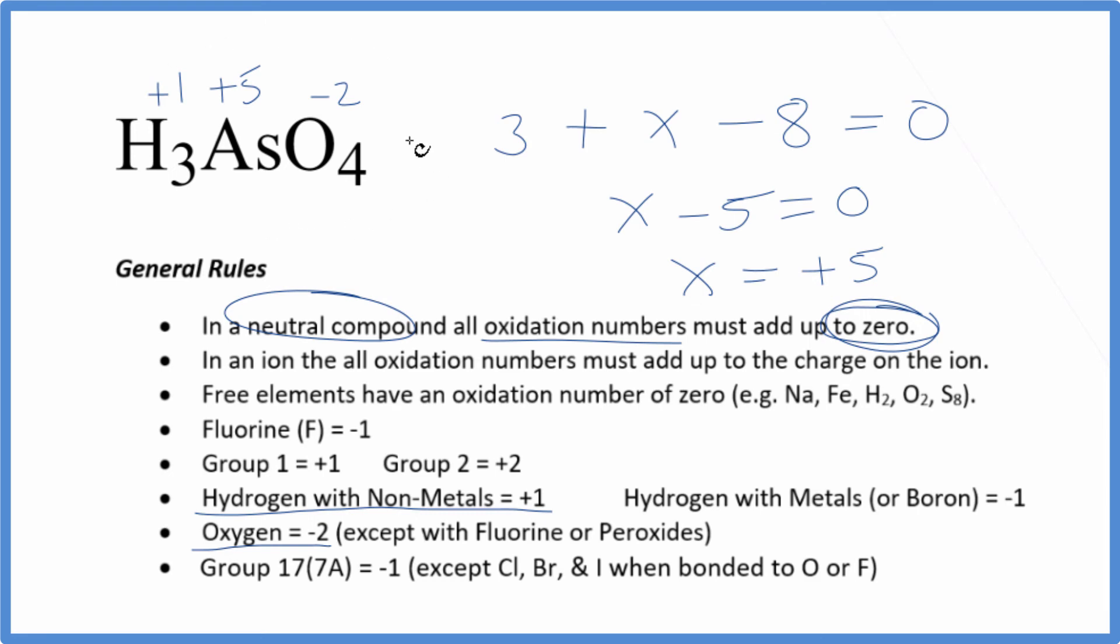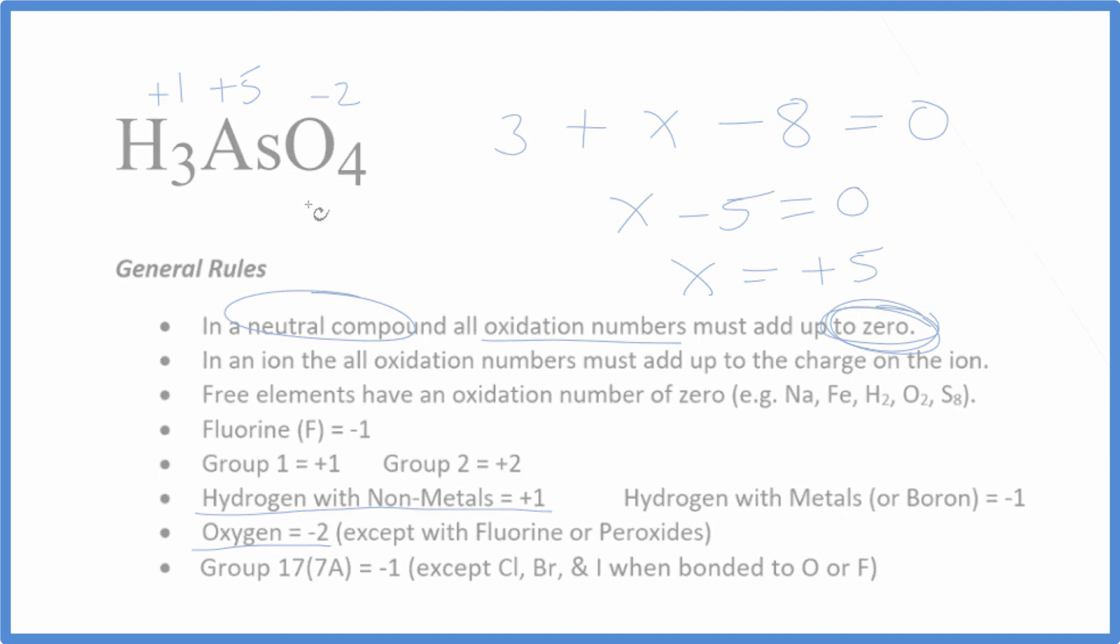And if you add all of these numbers up for each atom, you'll get zero because it's a neutral compound. This is Dr. B with the oxidation numbers for H3AsO4. Thanks for watching.